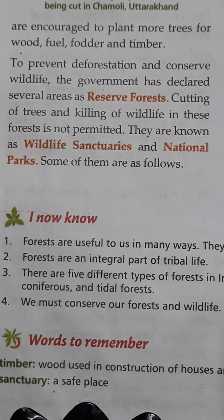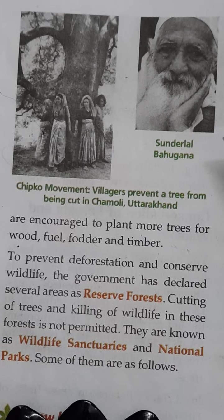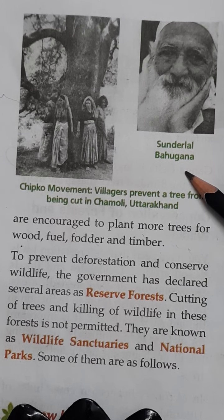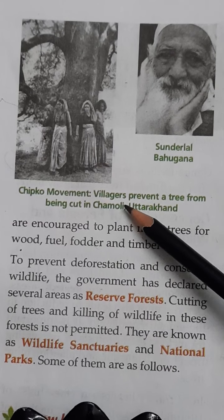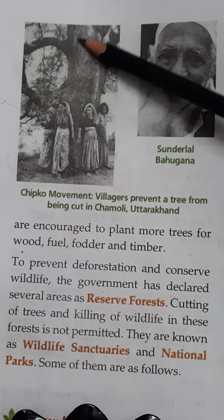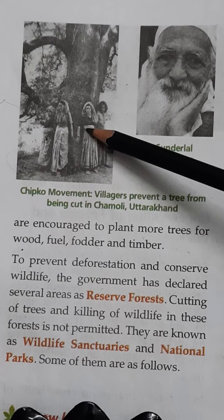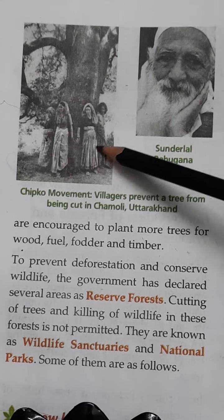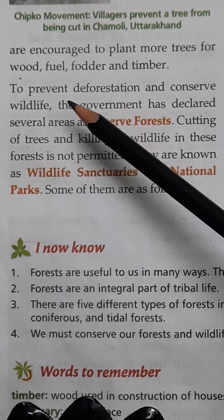This movement was led by Sunderlal Bahuguna. It was known as the Chipko Movement — because the people chipak gaye (clung) to the trees. The Chipko Movement was started in 1974 in the hills of Uttarakhand as a novel method of preventing deforestation.